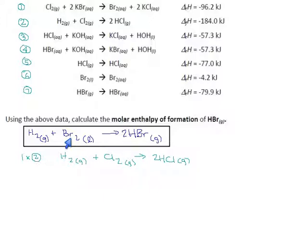All right, that gets us our hydrogen. So far, so good. We need bromine in liquid state on the left. Reaction six is the only one that can give us liquid bromine, and it's in the perfect spot. So we don't have to do any flipping or multiplying. We just do one times reaction six. I'm supposed to be tracking delta Hs aren't I? Reaction two was minus 184. Br2 liquid turning into Br2 aqueous is minus 4.2 kilojoules. Not very much.